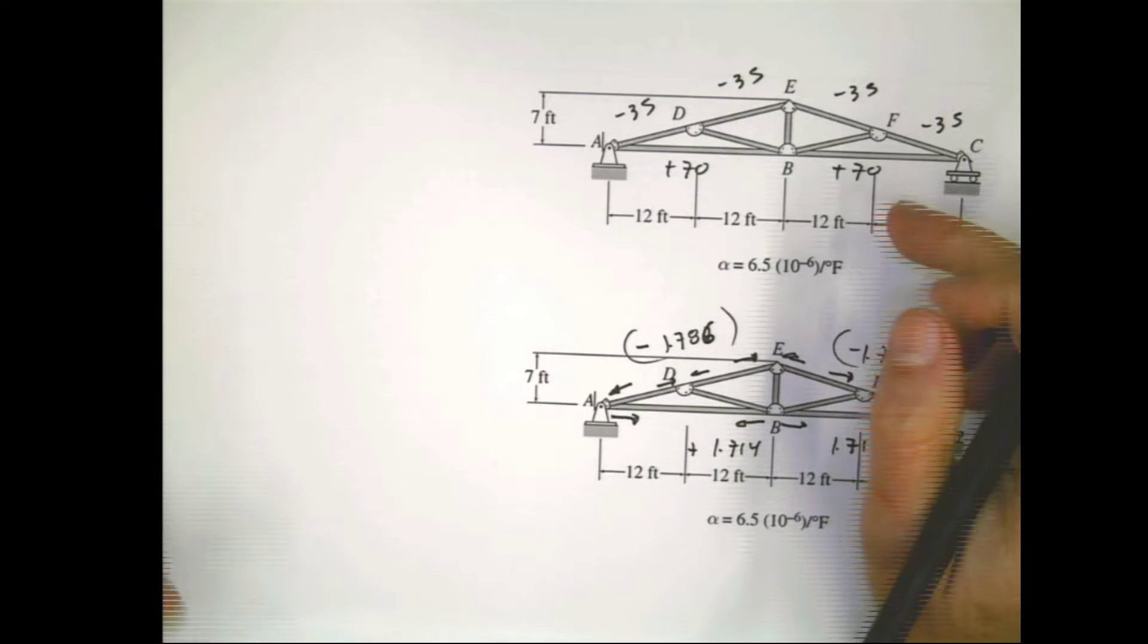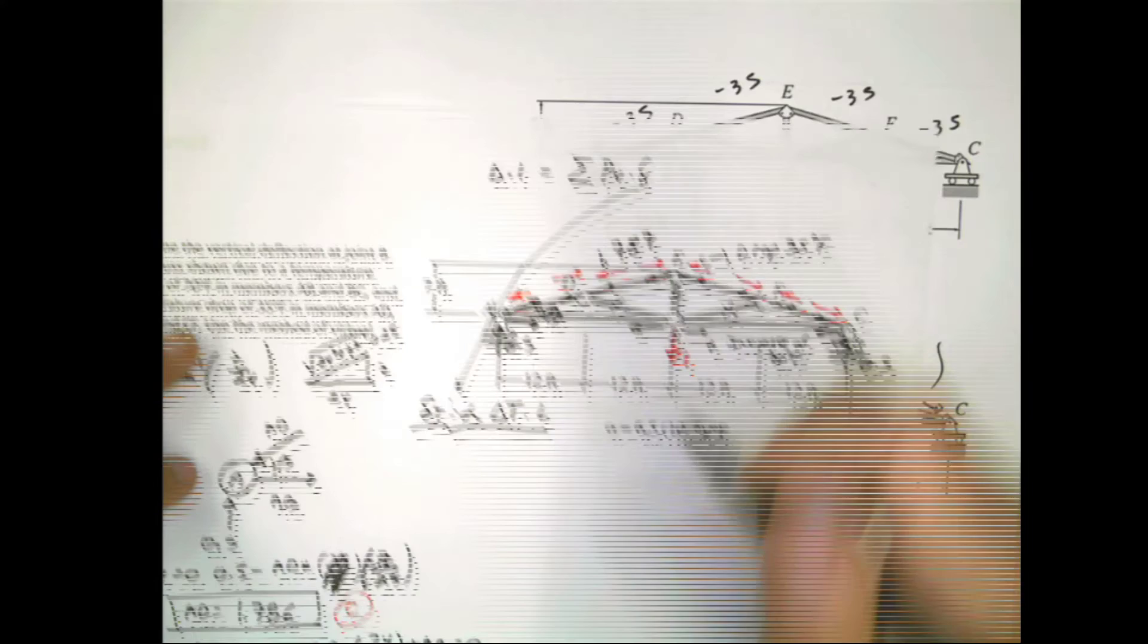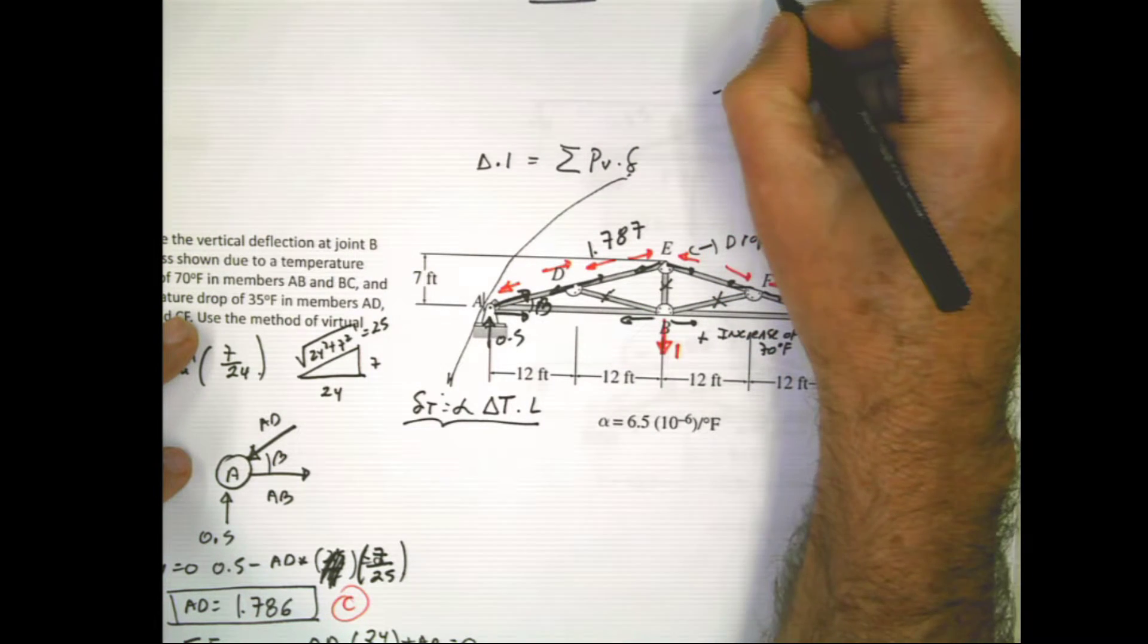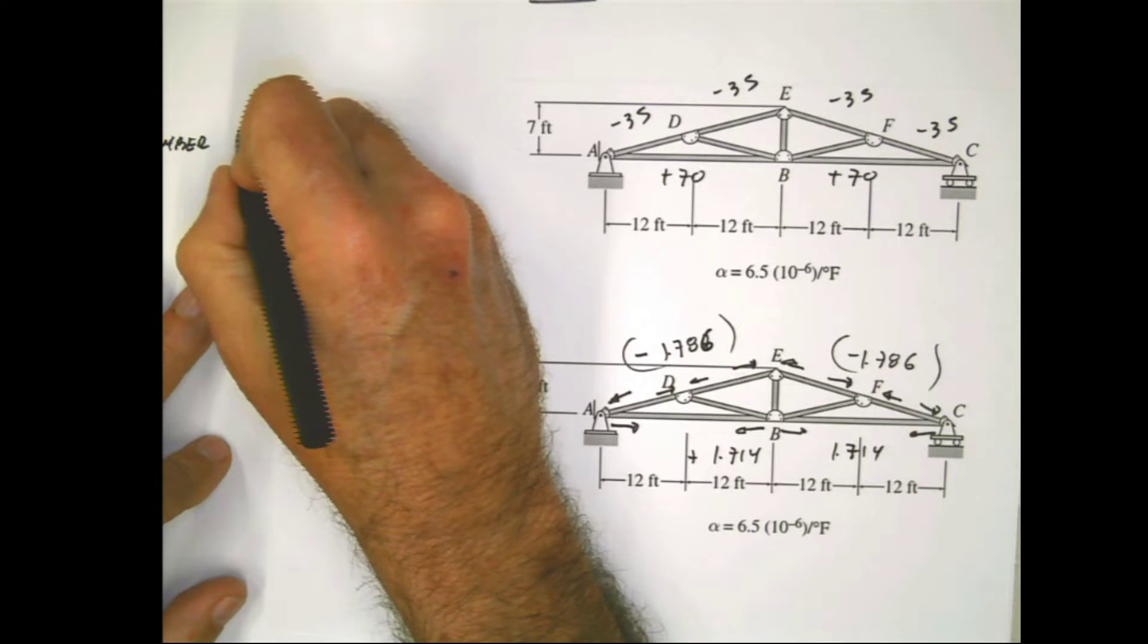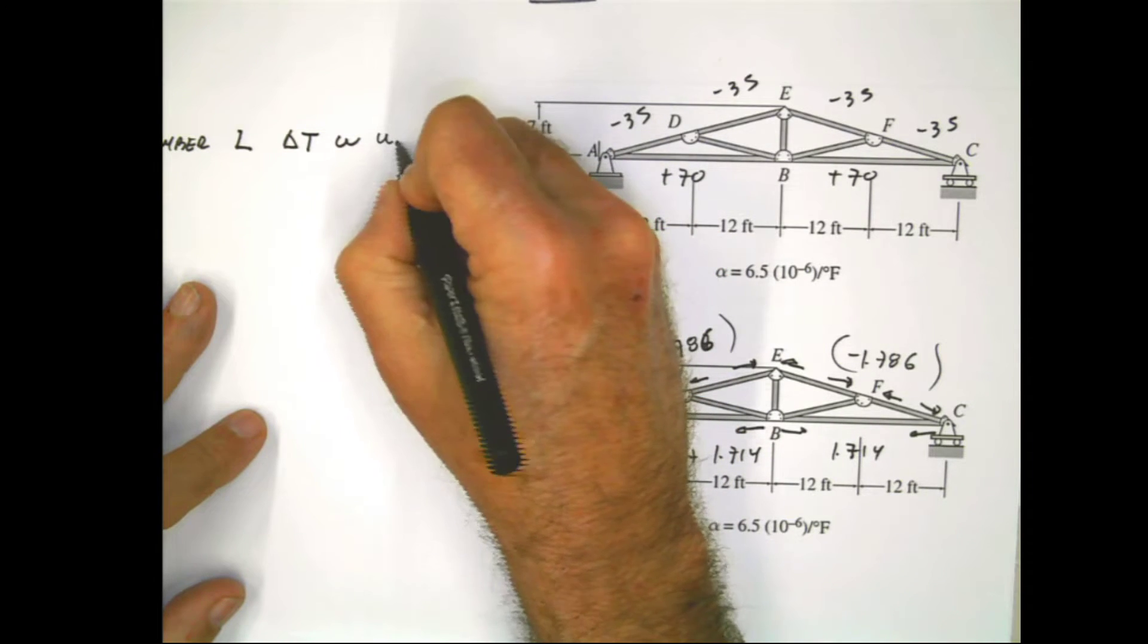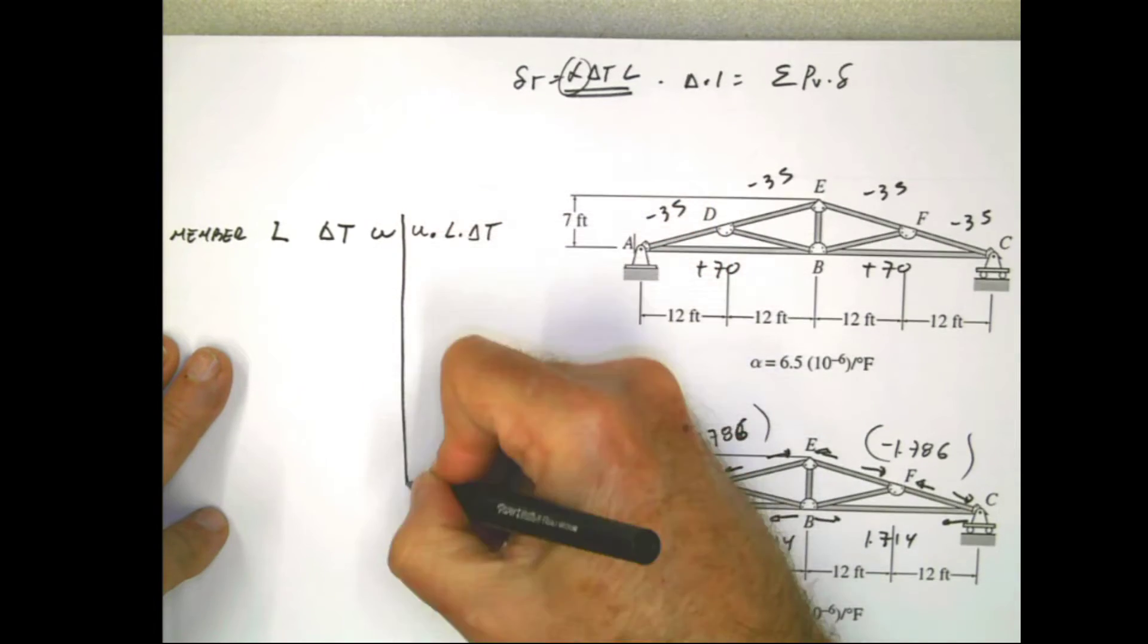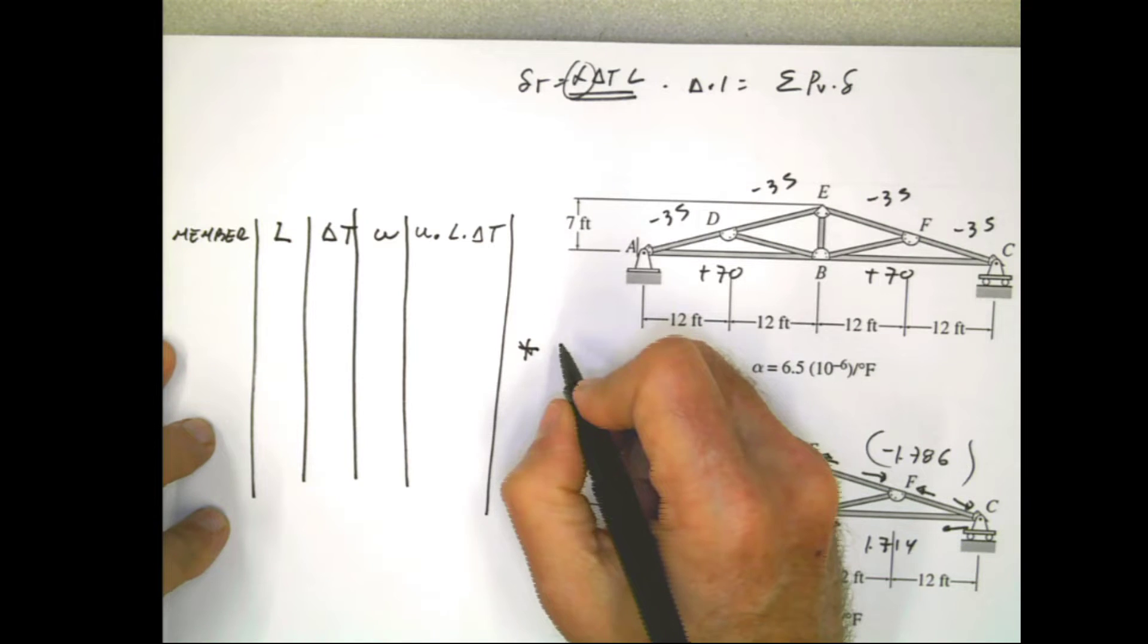Now we can build a table for this one also. But the table is going to be something like member. Remember the formula, remember the Alamo. Delta is alpha delta t times L. And on top of that, the virtual work is delta times 1 equals the summation of the internal forces, the internal virtual forces, times that deformation. So I'm going to need in this table member, and I'm going to need L, delta t, u which are my internal forces, and then u times L times delta t. And then at the end, this alpha is the same alpha for all of them, so I'm going to keep it outside. I'm just going to build my table here. At the end remember I'm going to get all of these and multiply this by alpha.